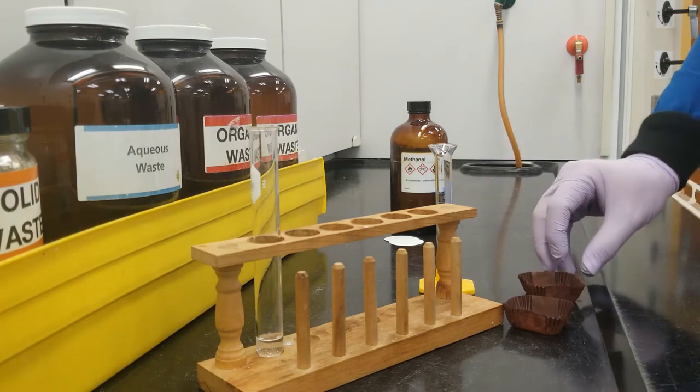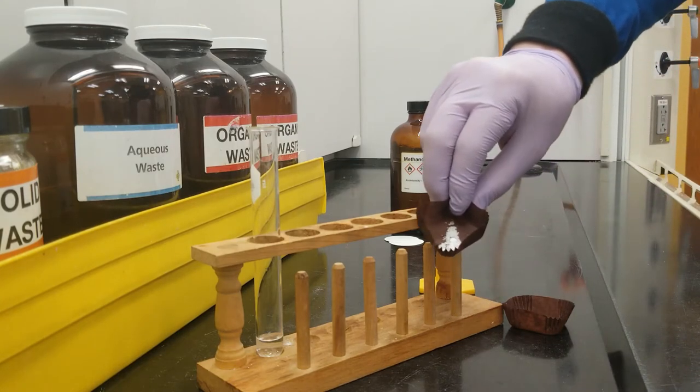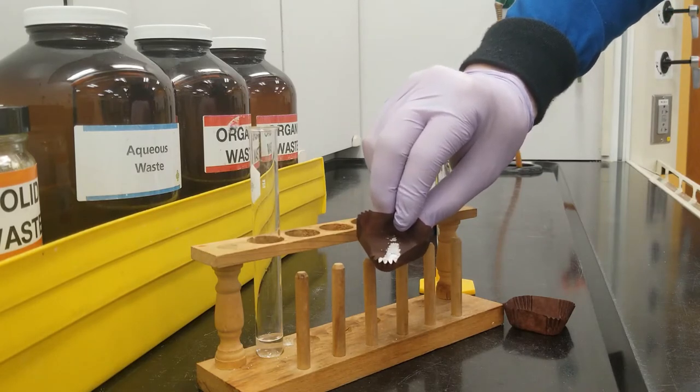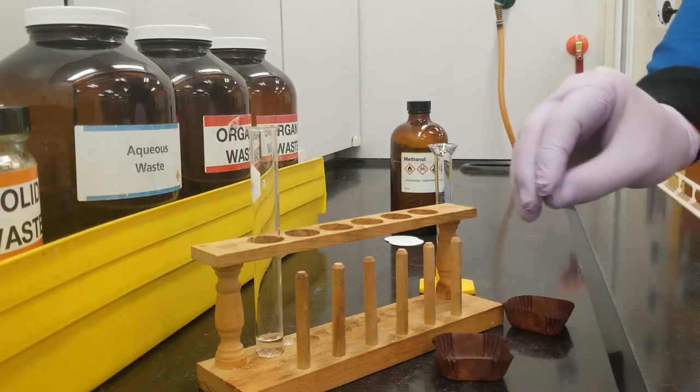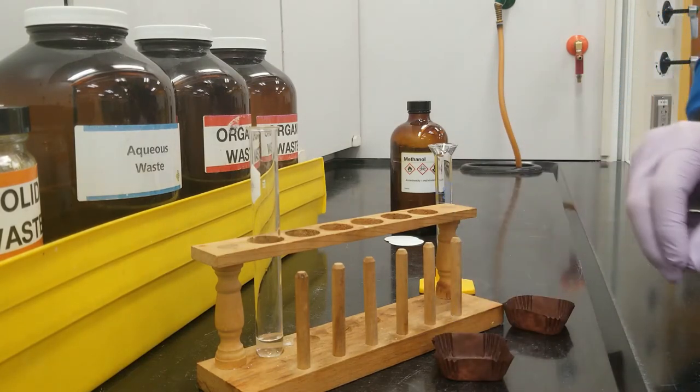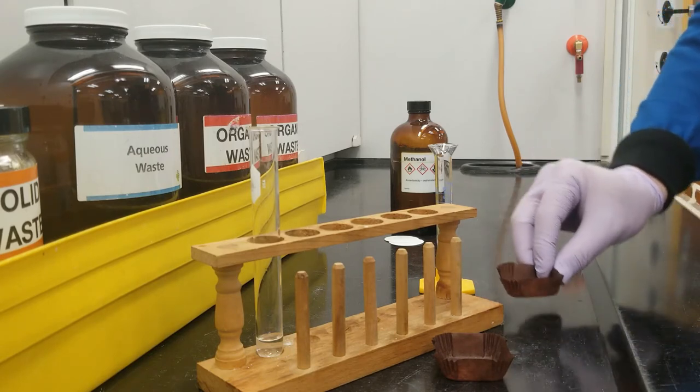Let's start by introducing our reactants today. So here is our benzophenone. This is a slightly granular white solid, and the most important part of this benzophenone today is its ketone group, which we are going to be reducing with the help of some sodium borohydride over here.